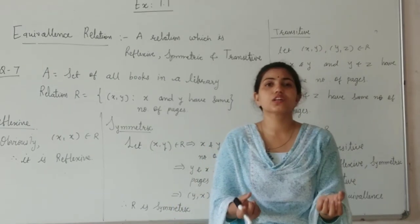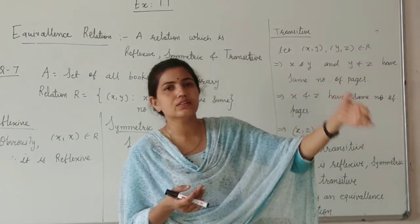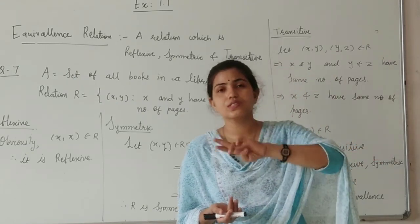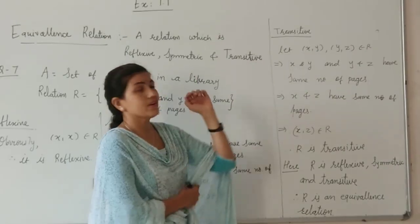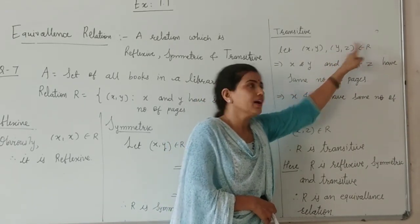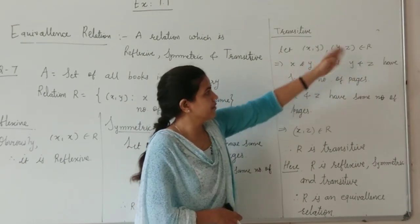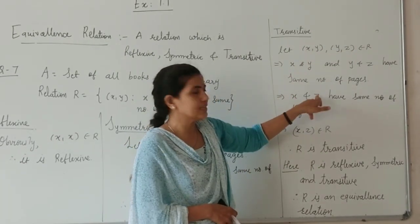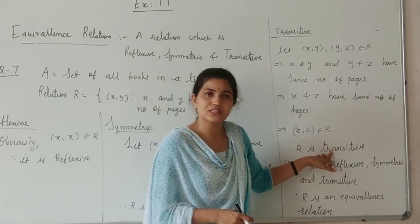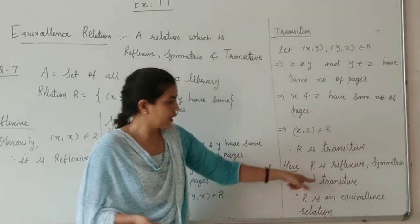Now, transitive. For transitive, we consider three books. The first book and the second book have the same number of pages, and the second and third have the same number of pages. Obviously if three books all have the same number of pages, then the first and third also have the same number of pages. So if (X, Y) and (Y, Z) belong to R, then X and Z have the same number of pages. That means (X, Z) belongs to R. Therefore R is transitive. So we have checked that R is reflexive, symmetric, and transitive. Therefore R is an equivalence relation.